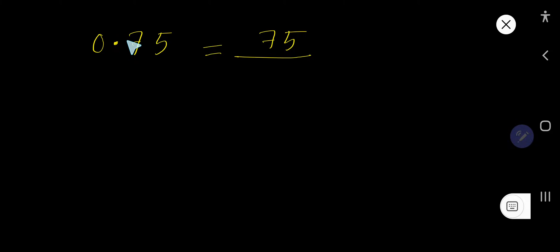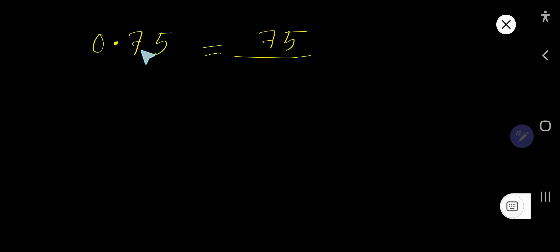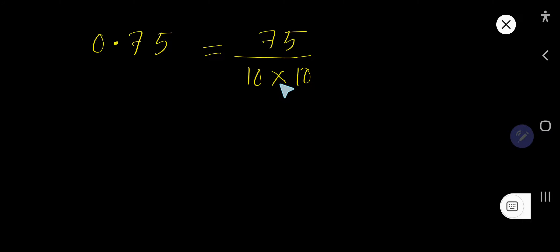First, you need to remove the decimal point and write the number you are getting — we get 75. Then, after the decimal point, look: we have two digits. For every digit after the decimal point we consider 10, so 10 for 7 and 10 for 5, and you need to multiply them.